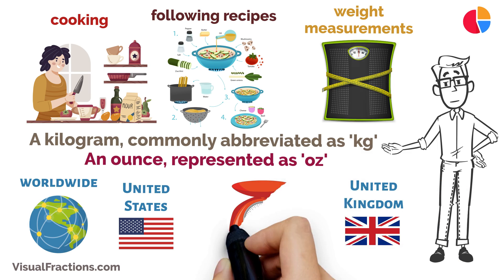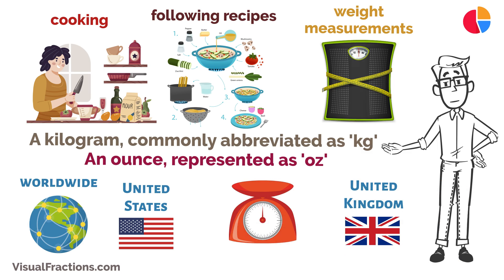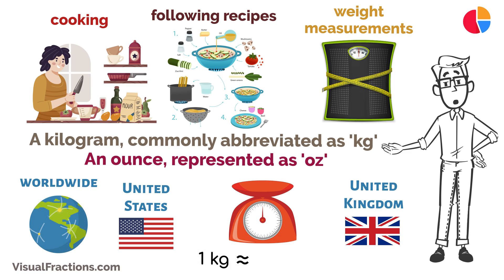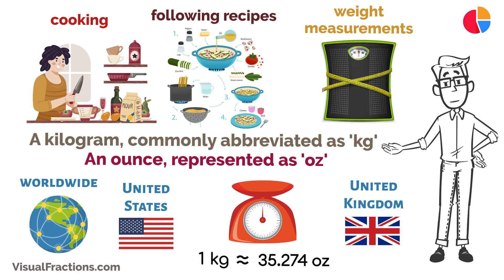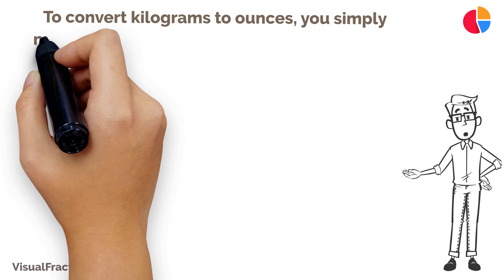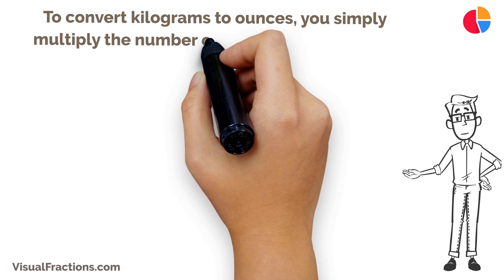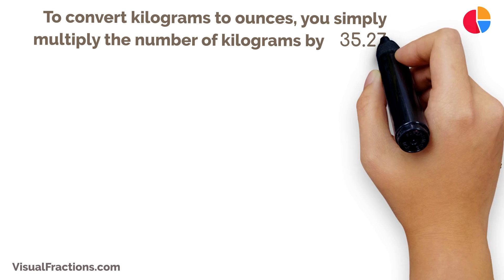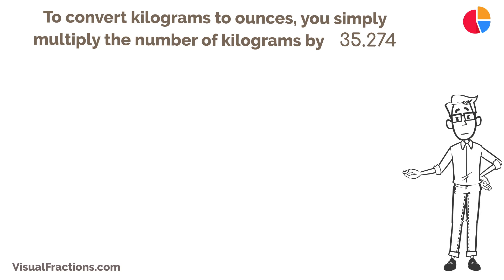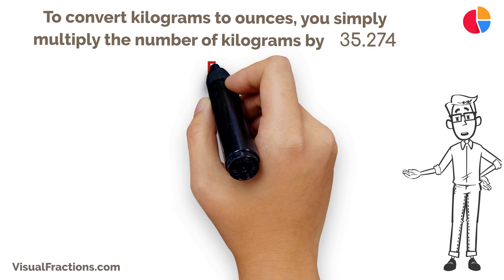Now, for the essential part: one kilogram is equal to approximately 35.274 ounces. To convert kilograms to ounces, you simply multiply the number of kilograms by 35.274.